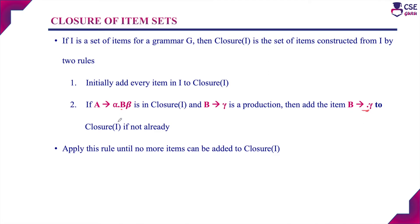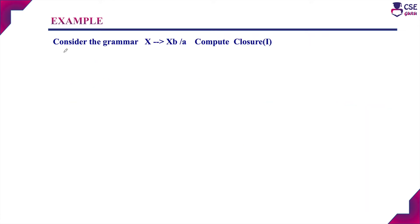Apply this rule repeatedly until no more items can be added to closure of I. Now we will discuss an example to understand this better. Consider the grammar: X derives XB or E. For this given grammar, we need to compute closure of I.